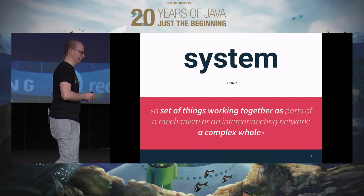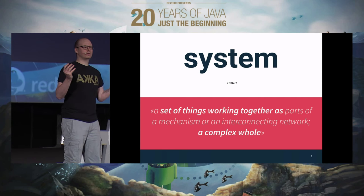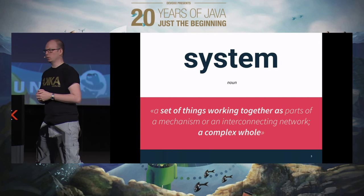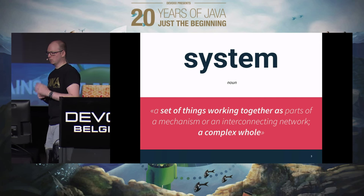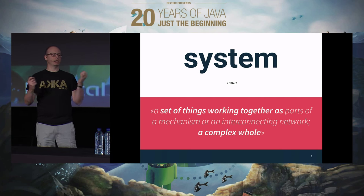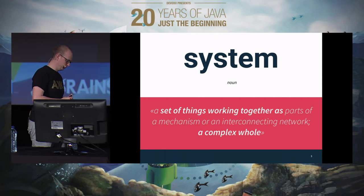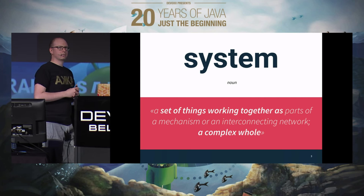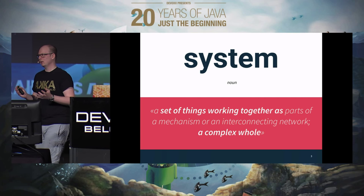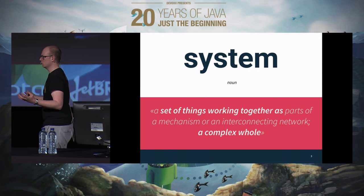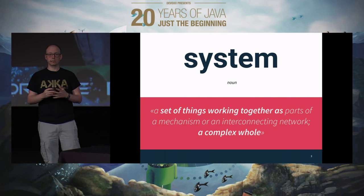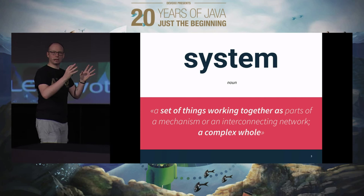What is a system? We're programmers — we write systems, we create systems, or rather, do we encode systems? A system is a set of things working together as part of a mechanism or an interconnecting network — a complex whole. Technically, we are systems living within systems, living within systems. Everything is systems all the way down.